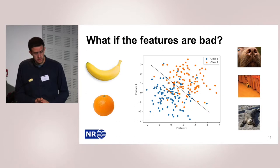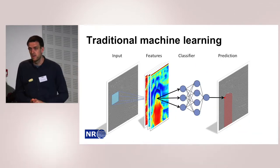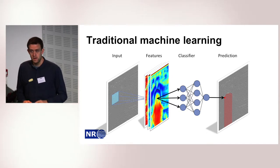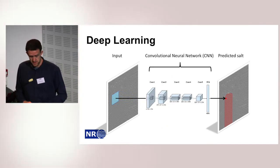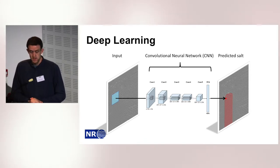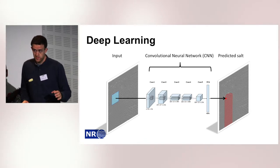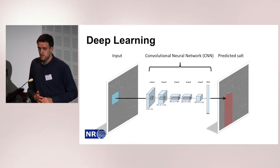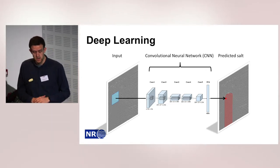In deep learning, we replace the entire feature-plus-classification pipeline with a convolutional neural network — a CNN. That's a neural network like I showed before, but it has one change: it's convolutional.